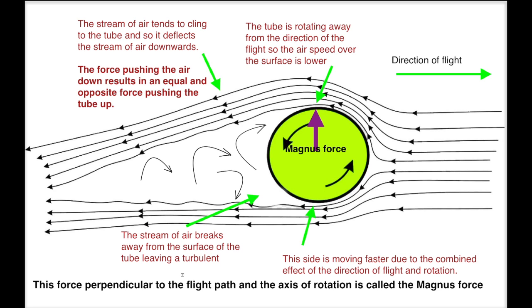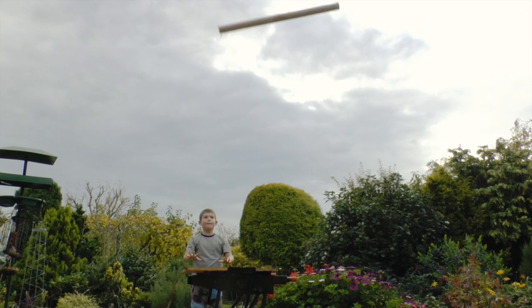As the direction of the flight of the tube alters, that upwards force moves sideways and takes the tube around in a loop, like this.